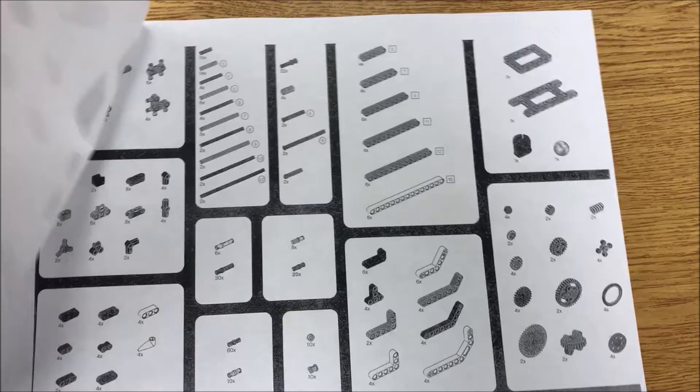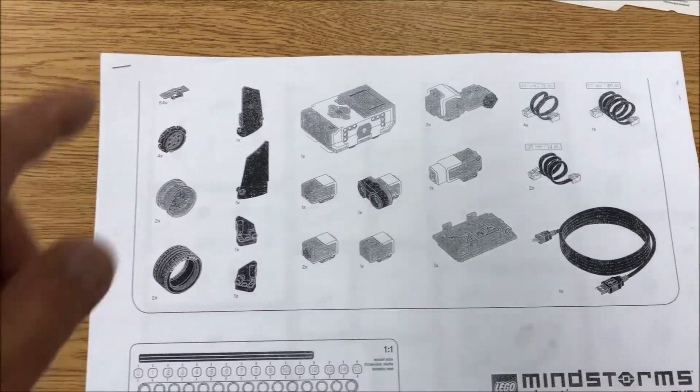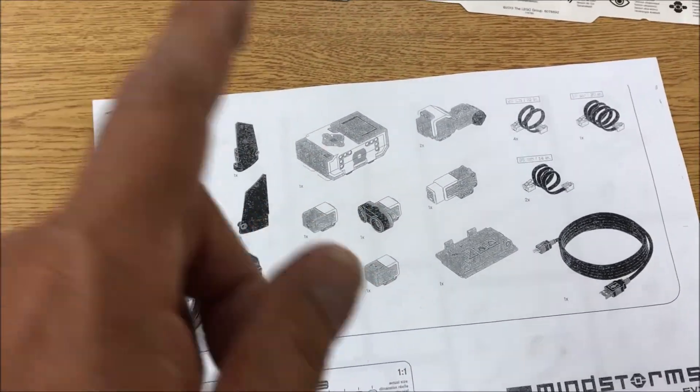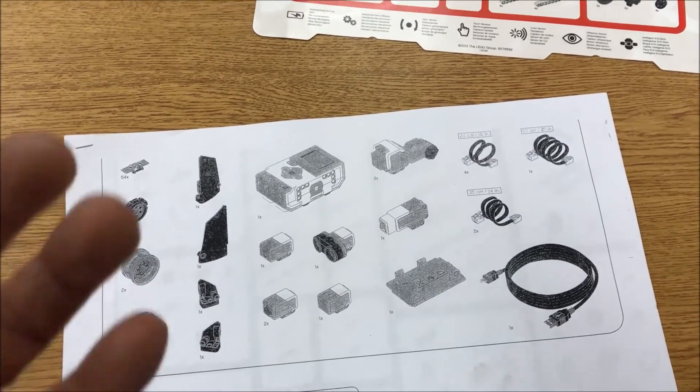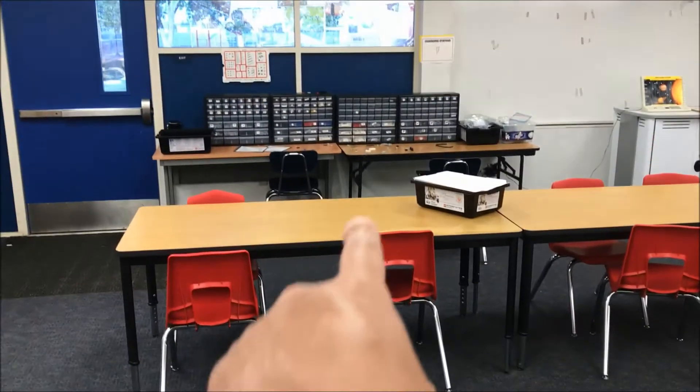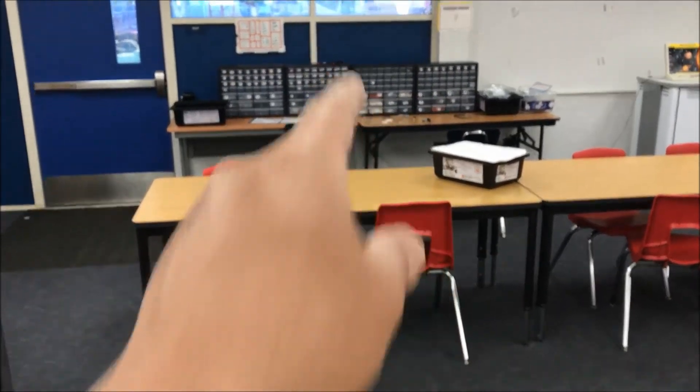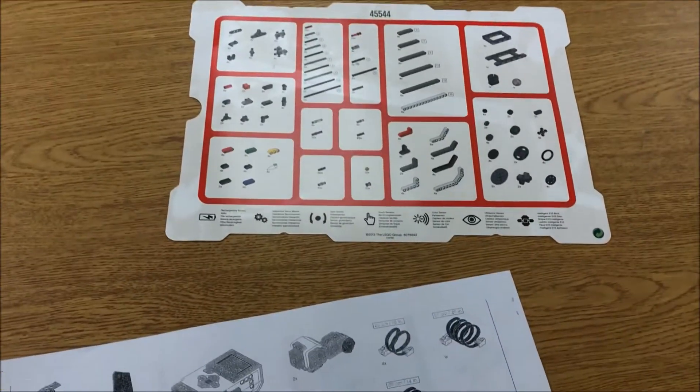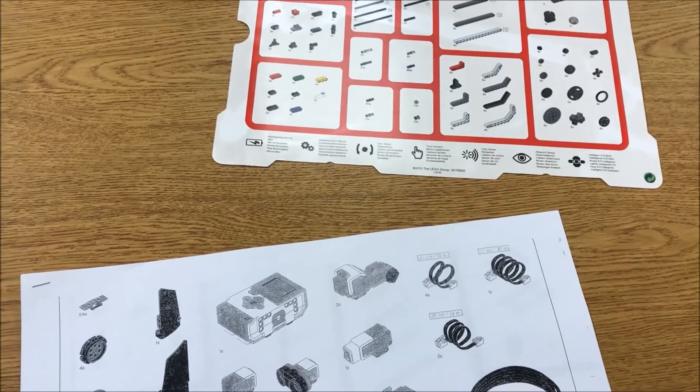What I have my students do is go through their kit and check off everything that they have. If they have extra pieces, they give it to me. If they don't have enough, they'll go into those drawers, get what they need, and then check off that they have all these pieces.